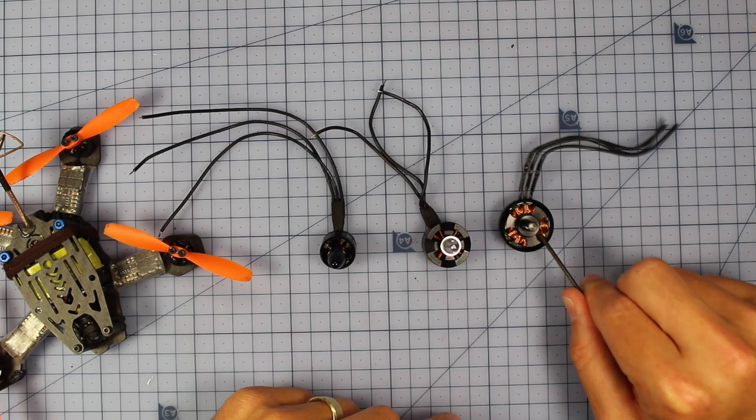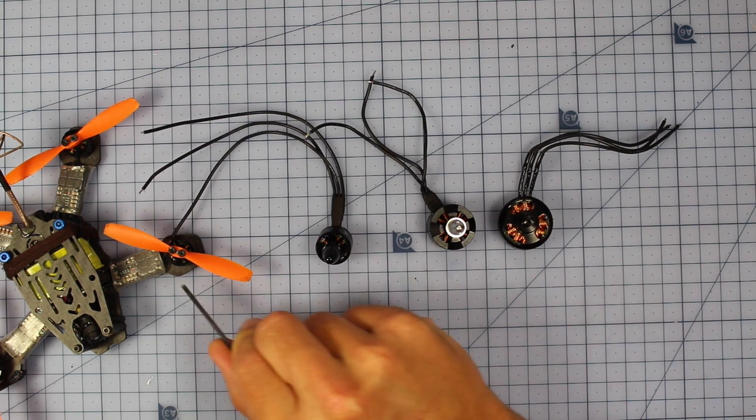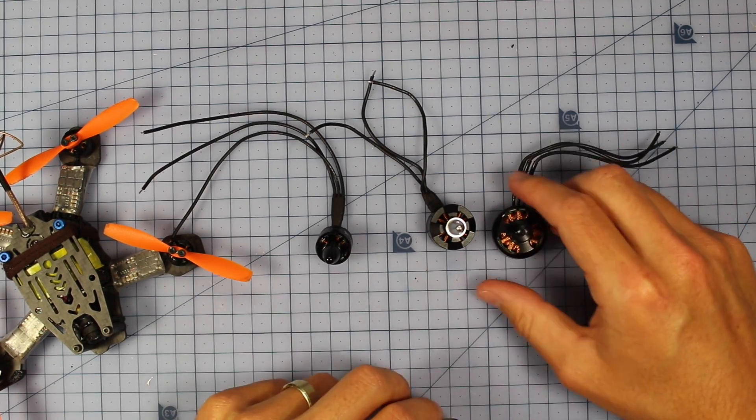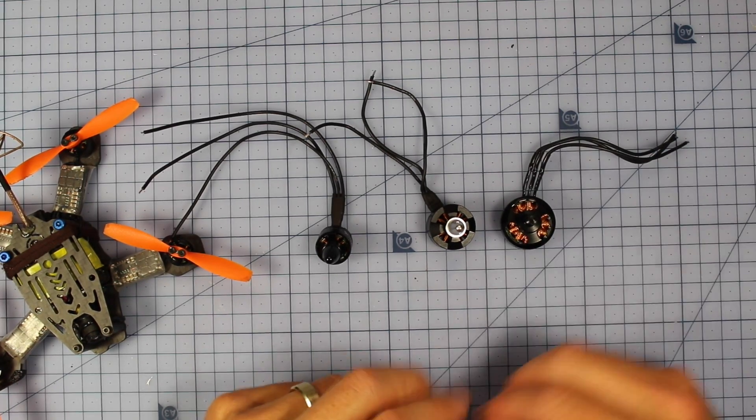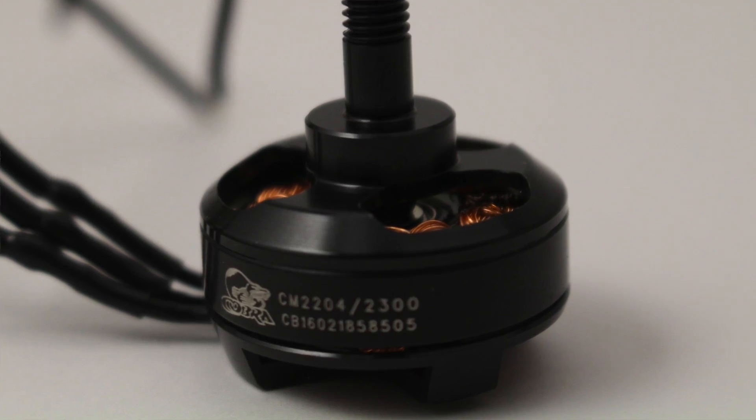We're going to talk about what those numbers mean. The first digits, the first two digits like the 22, the 18, the 13, or the 11, tells you the diameter of the motor. This one is 22mm across like this because this is a 2204.